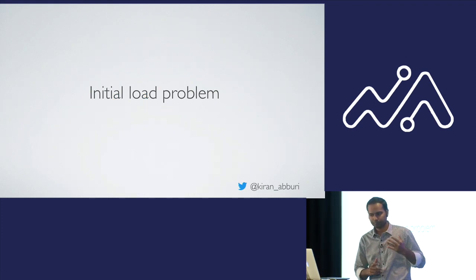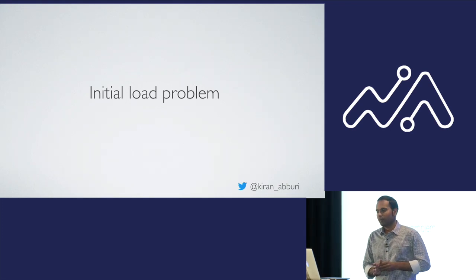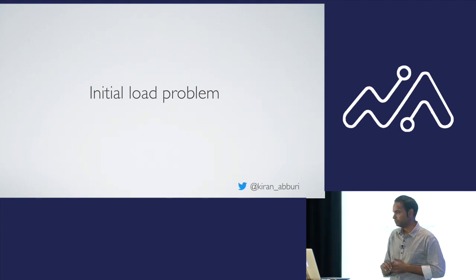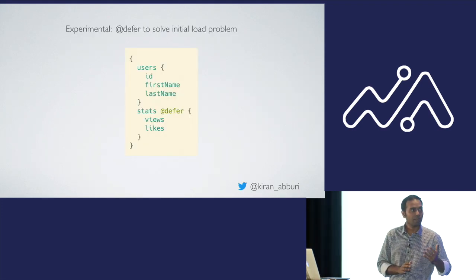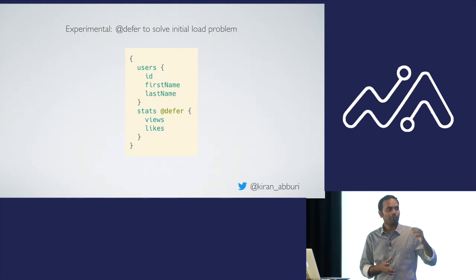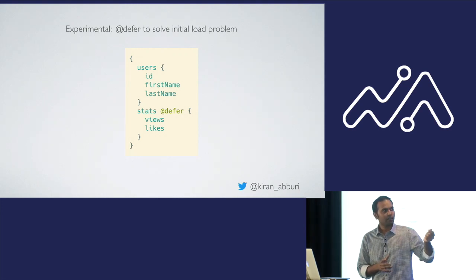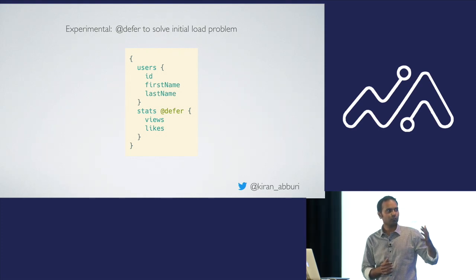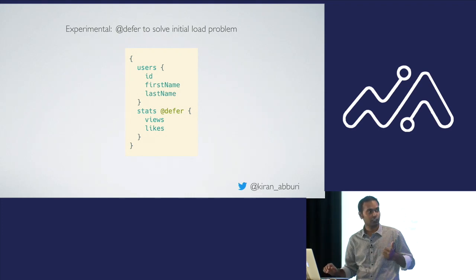We still have the initial load problem because we're prefetching much more data than currently needed to support offline mode, making the initial page load slower. There was an experimental Apollo feature coming to solve this — prioritizing data fetching using an @defer directive. For example, on a user list page, user data is fetched immediately but stats data marked with @defer is deprioritized and fetched a bit later. Hopefully @defer will solve the initial page load problem.